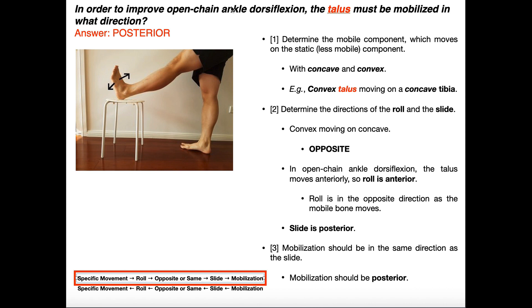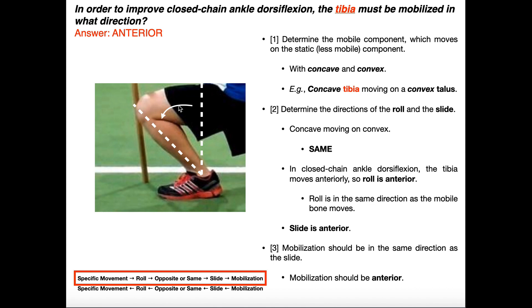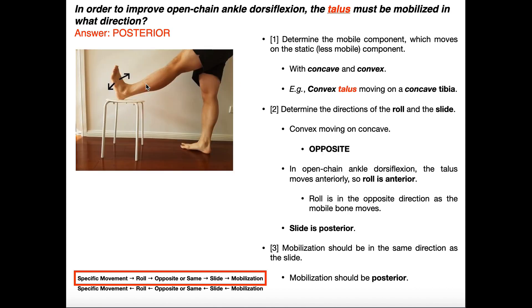We're doing open chain ankle dorsiflexion. In this picture, dorsiflexion would be if this person pointed their toes up — basically bending the ankle so that your toes point more up toward your head. The key here is that the foot is not planted on the ground. If the foot were planted and you did a dorsiflexion, that would be closed chain. This is open chain because the foot is not planted, and the foot itself is clearly the more mobile of the two components.